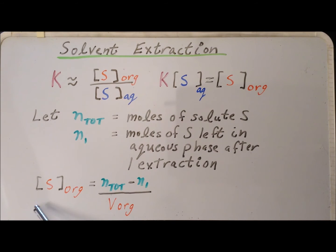We know that the concentration of the solute in the organic phase equals the total number of moles of solute that we started out with minus N_1, which is the amount left in the aqueous phase, divided by the volume of the organic phase. Then we have the concentration of S aqueous, the concentration of the solute in the aqueous phase after one extraction step. That's equal to N_1, the number of moles left in the aqueous layer, divided by the volume of the aqueous layer.